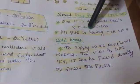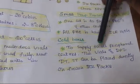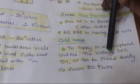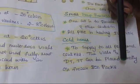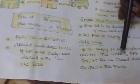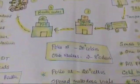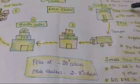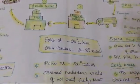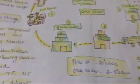Then the cold boxes: to supply all the peripheral centers, vials of DPT and DT can be placed directly on frozen ice packs. This is called the cold box. No salt is added to the ice packs in the cold boxes — plain water ice packs are added and frozen.